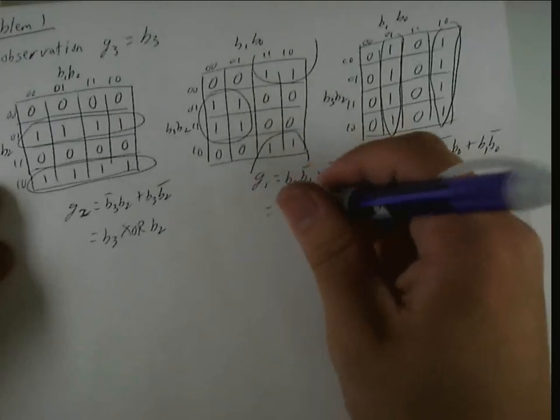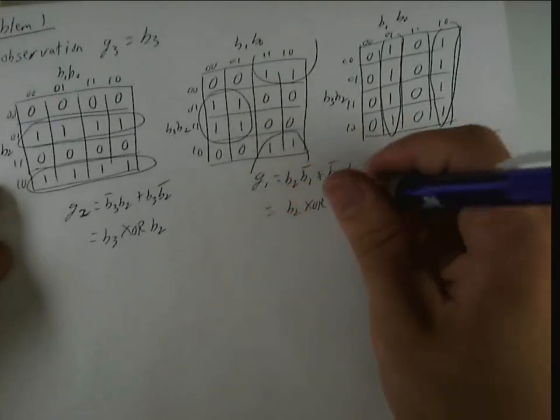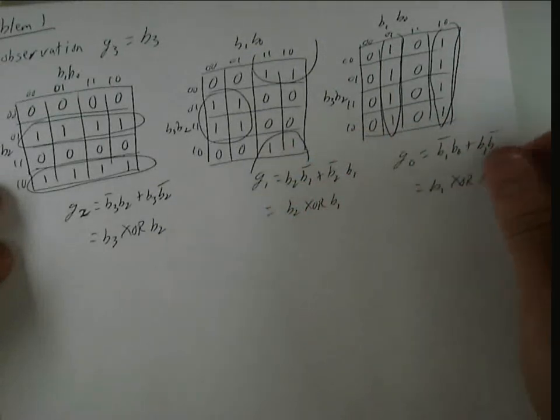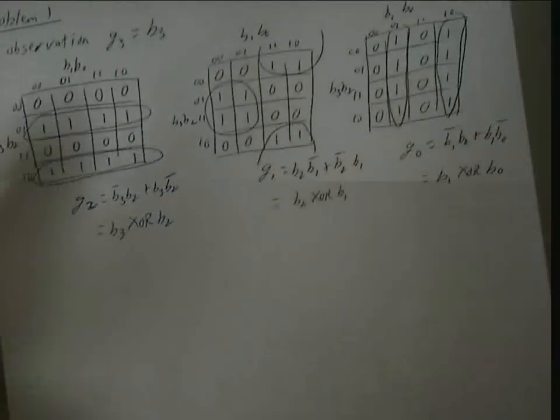So this one is equal to B2 XOR B1, and this is equal to B1 XOR B0.